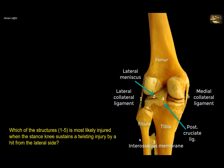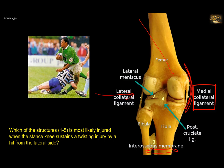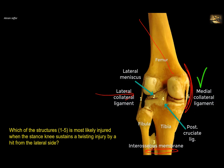A hit from the lateral side is the common scenario of injury in contact sports. In a stance knee, the tibia and fibula are fixed on the ground. A hit from the lateral side results in abduction of the femur. This abduction causes stretching and rupture of the medial collateral ligament, which is most likely to be torn. This type of injury might not only affect the collateral ligament, but also other structures starting with the letter C — three C's are affected. First: the collateral ligament, in this case the medial collateral ligament.